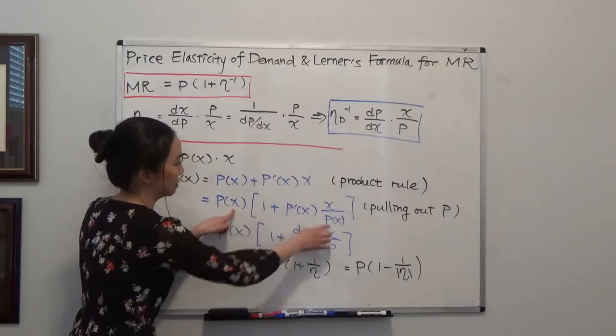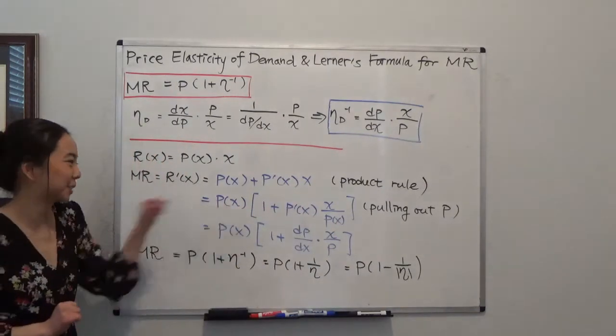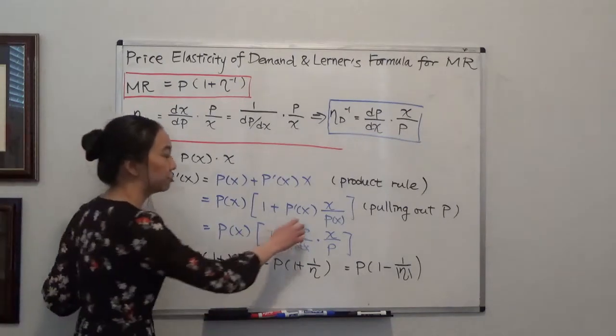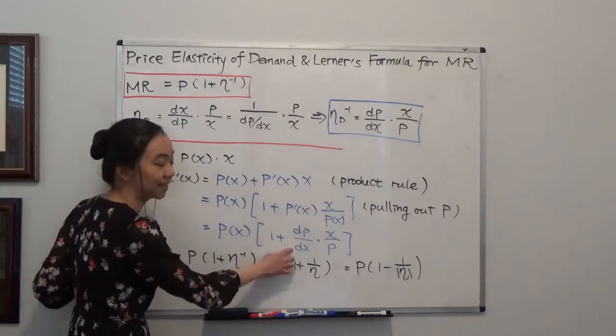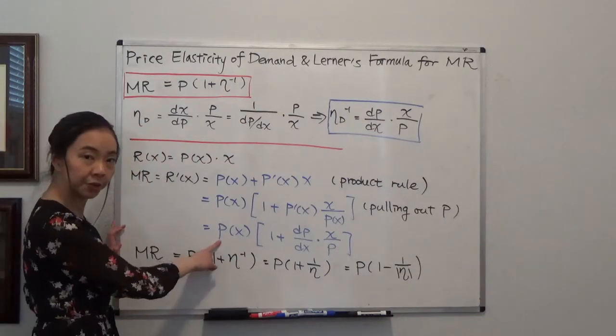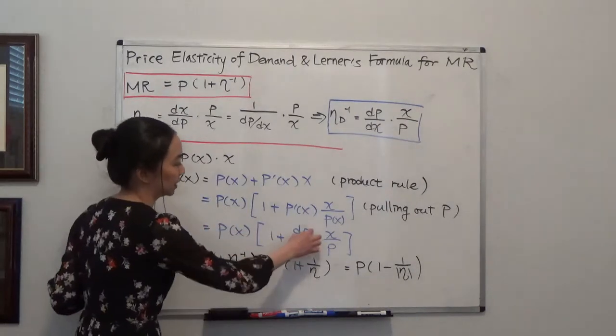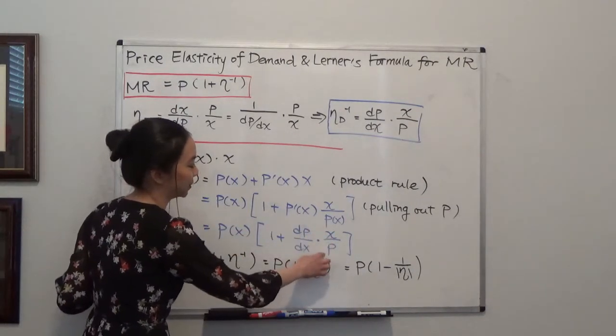You can see that if you multiply this, you just get that. So I'm just pulling out P(x). And I can rewrite P'(x) is just what? dp/dx. So you can see now my marginal revenue has become P(x) times 1 plus dp/dx times x over p.